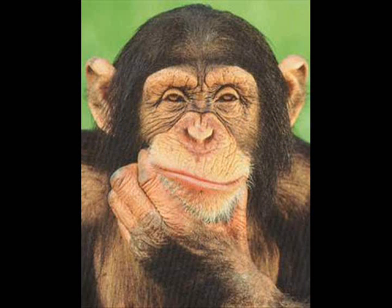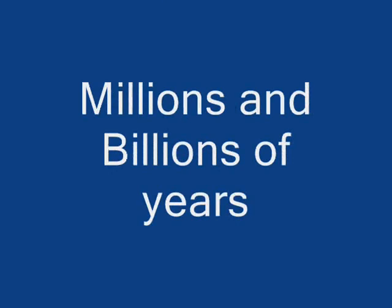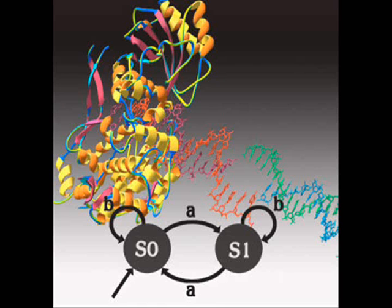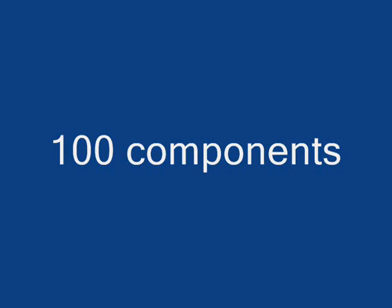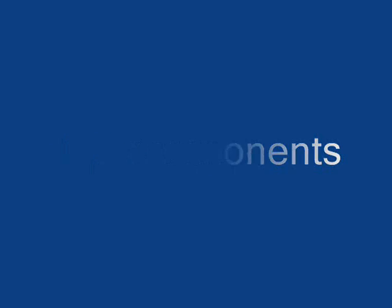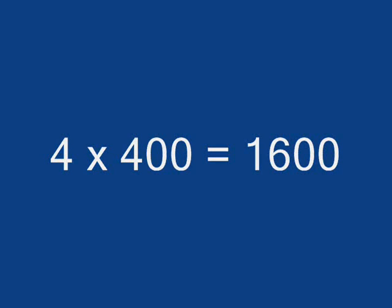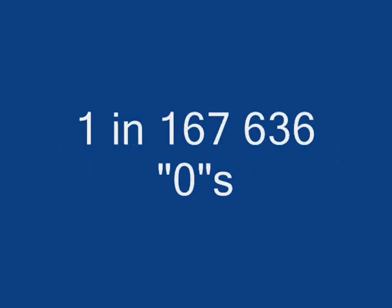100 components would have one chance in 100 million billion billion billion billion billion chances of being correct — and it all happened by chance. No wonder they want so many millions of years for it to happen. But those 100 components actually also have four chemical elements in each one, so now we've got 400 times four — which is 1,600 components. That would be one in ten with 167,636 zeros following. That would be the odds against such a right combination.